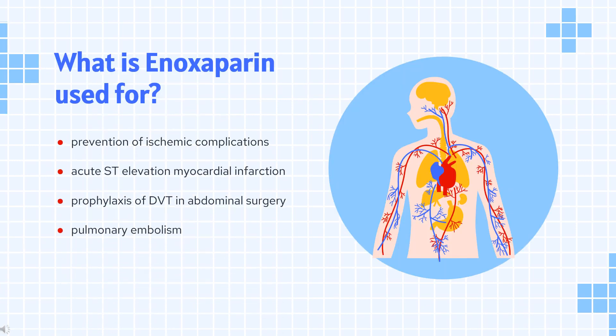What is enoxaparin used for? Enoxaparin is indicated for the prevention of ischemic complications in unstable angina and in non-Q-wave myocardial infarction. It is indicated in conjunction with percutaneous intervention and/or other treatment for the management of acute ST elevation myocardial infarction.